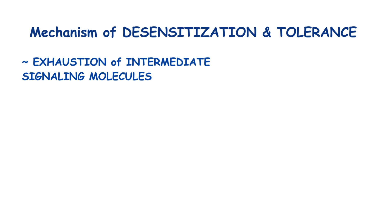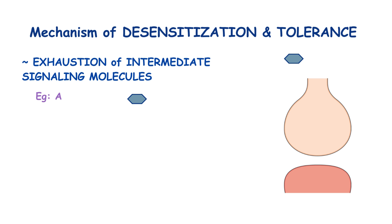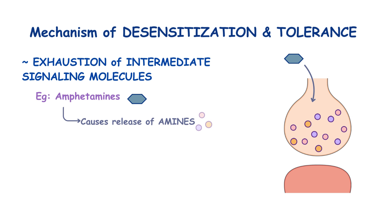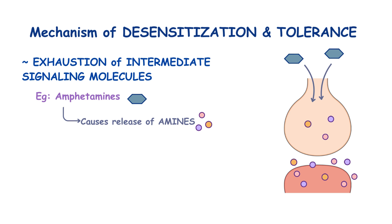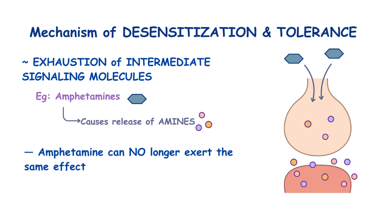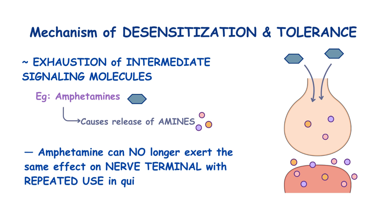In other cases, desensitization or tolerance arises from the exhaustion of intermediate messenger molecules. Take amphetamine for example, which normally causes the release of amines like dopamine, serotonin, and noradrenaline from the nerve terminal into the synaptic cleft. Amine stores are limited, so continuous amphetamine use can lead to their depletion, meaning amphetamine can no longer exert the same level of effect on nerve terminals with repeated use in quick succession.